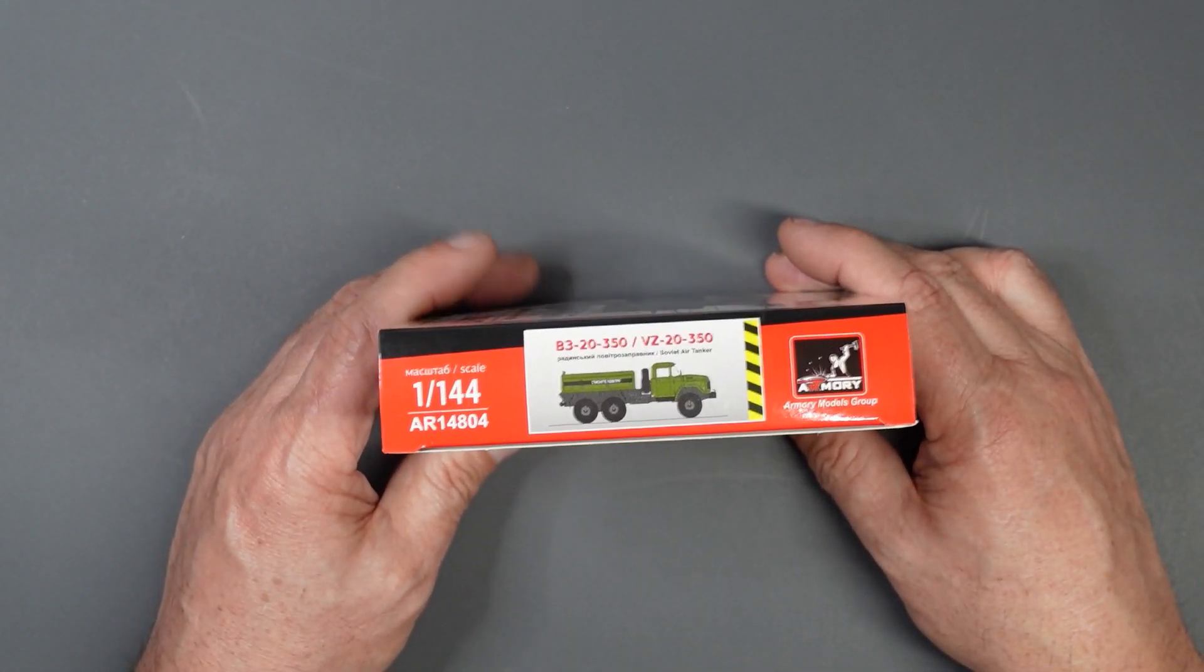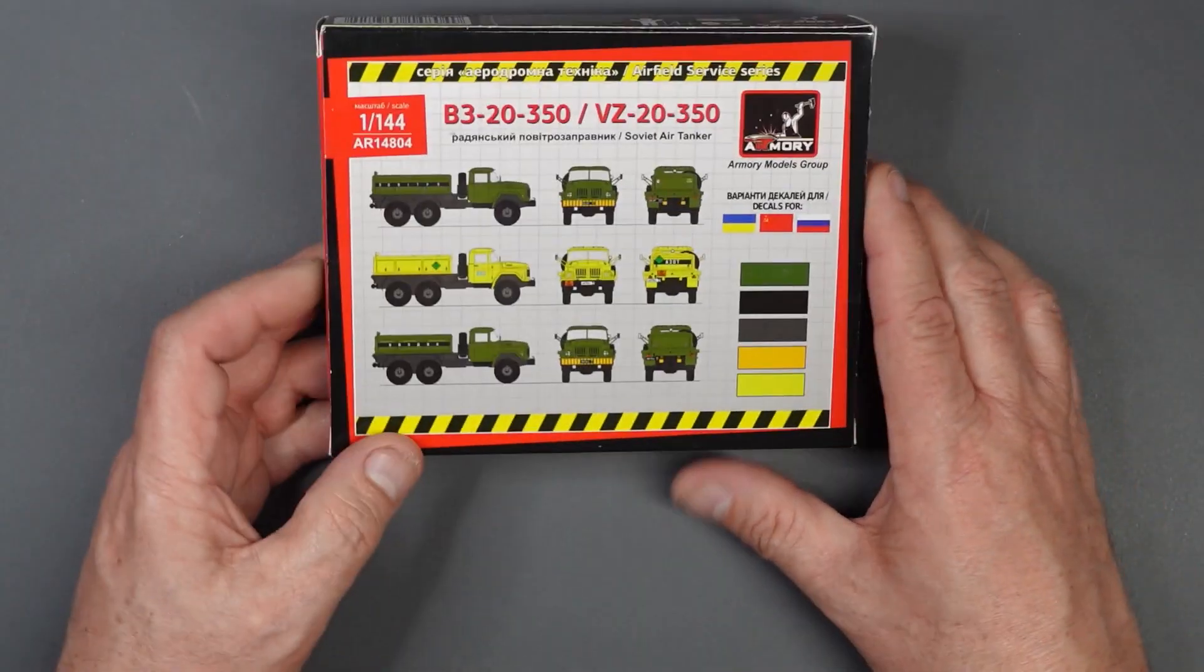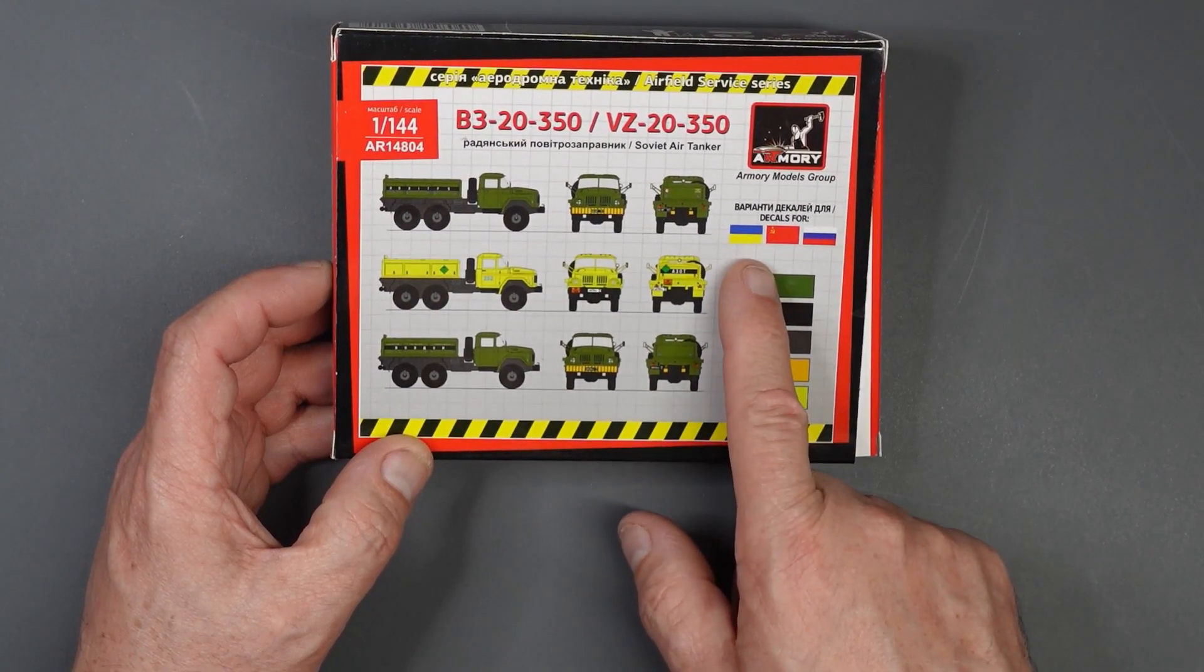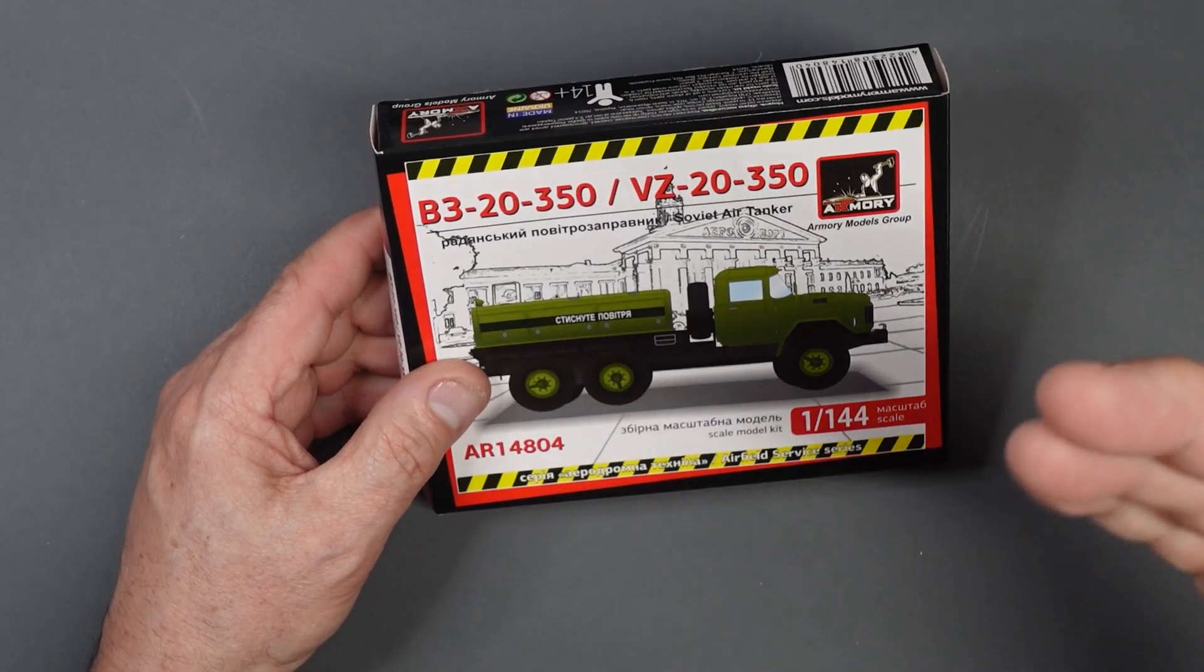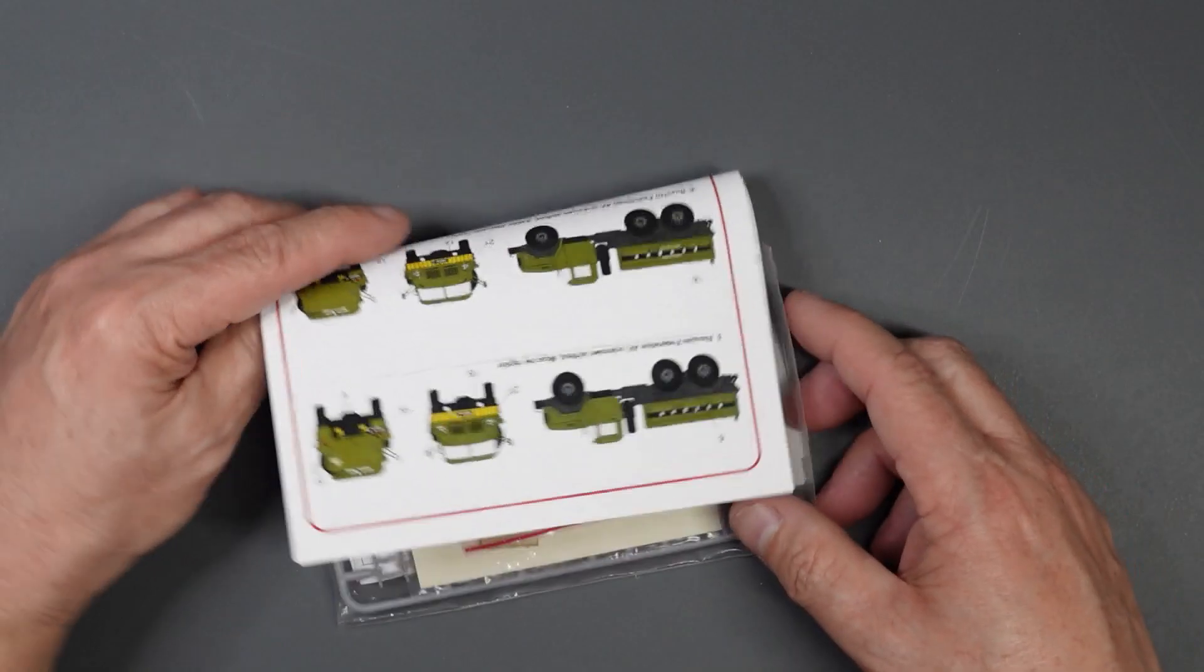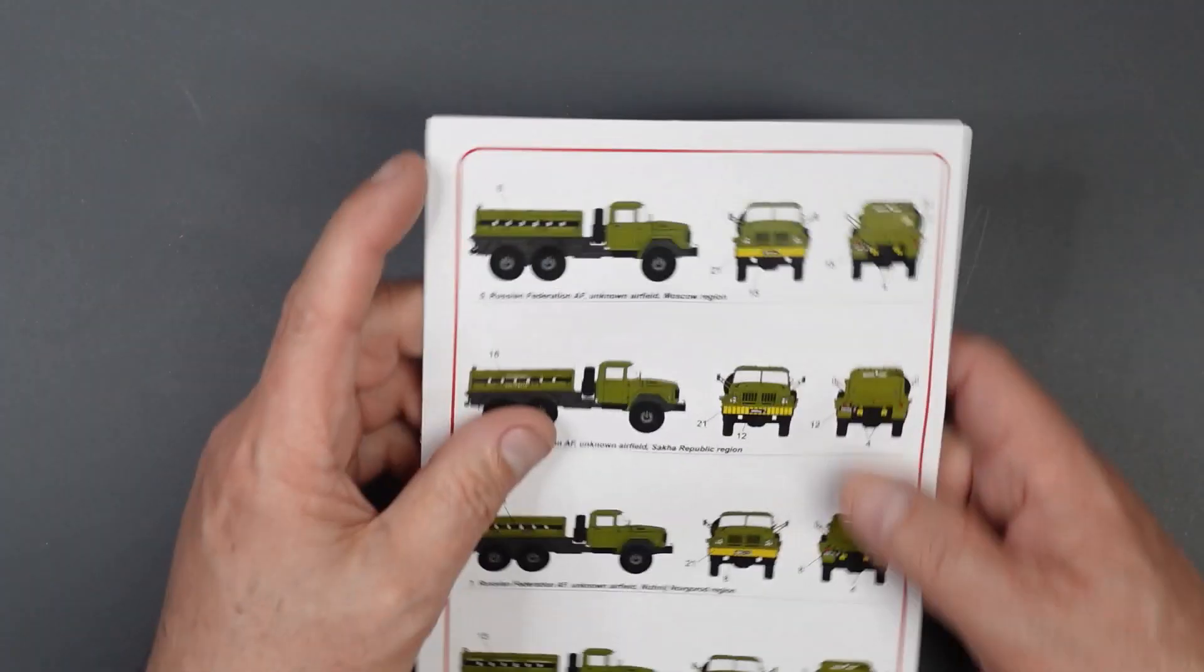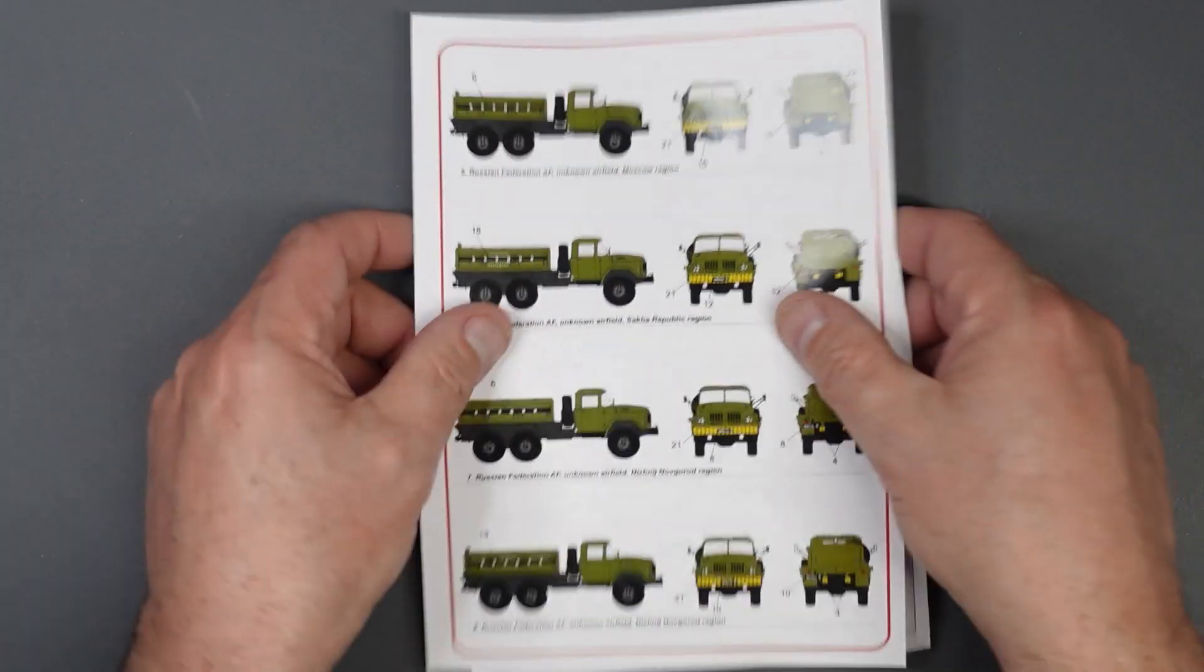And then on the side of the box here, we've got some health and safety stuff here, 14 plus, made in Ukraine. And then on the end of the box there, we've got another image of the model. On the side here, more images of the model. And then another one on the side there. And on the back, we've got more images of the colour schemes. And you can see we've got the option to have Ukraine, Soviet or Russian schemes. And we've got all the colours down there. So, as I say, let me know in the comments. It says Soviet air tanker. I don't know if they mean it's a tanker for airfields or if it's actually a compressed air tanker.